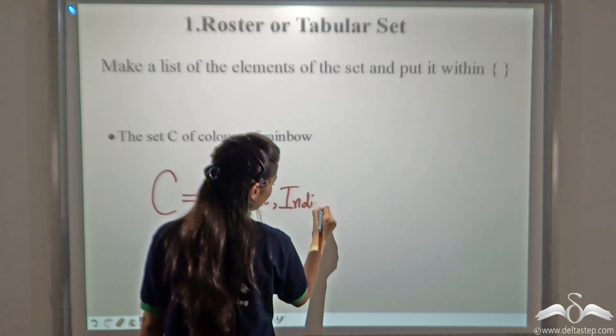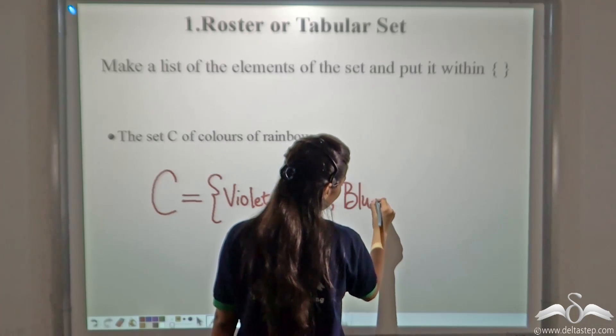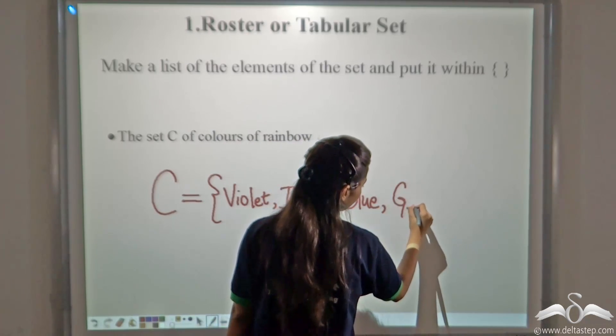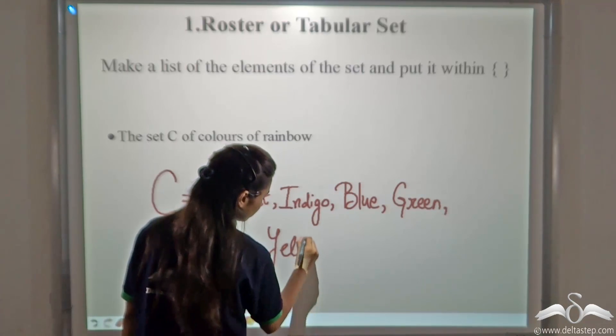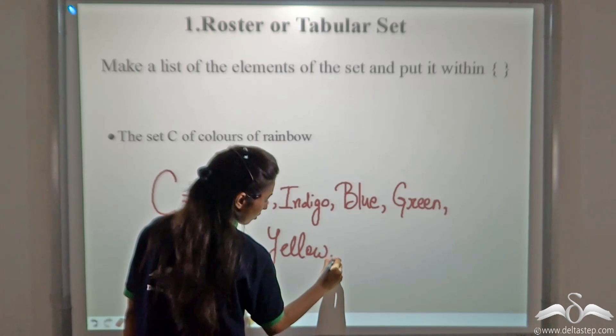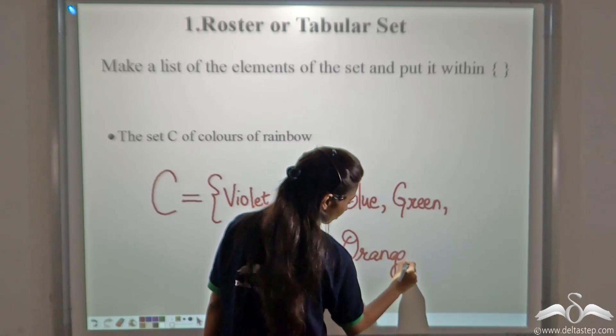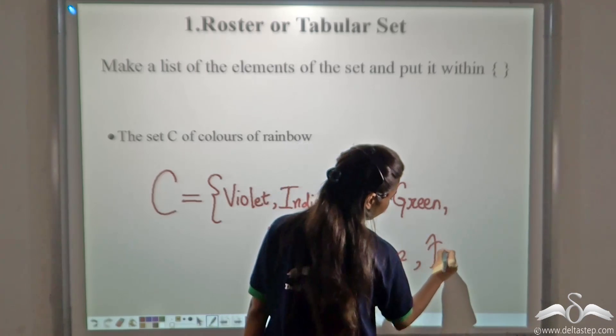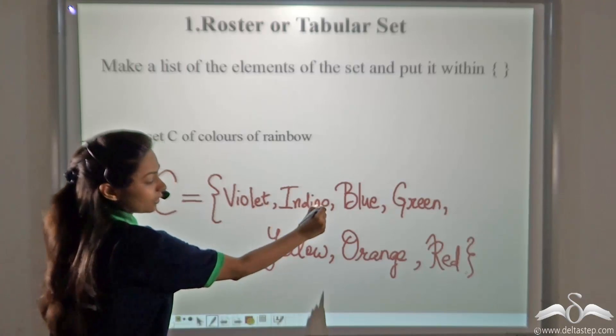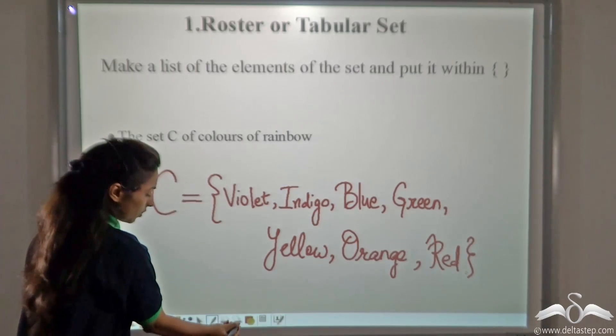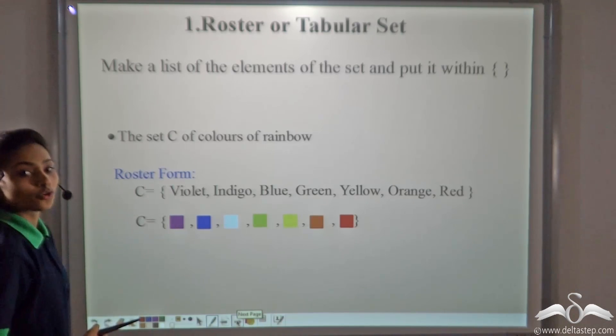Blue, Green, Yellow, Orange and Red. See, I have separated the elements with the commas. It will look something like this. So, this is called roster form.